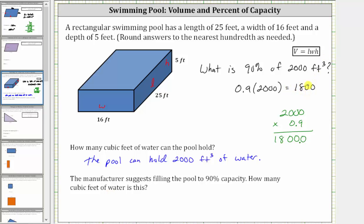Which means 1,800 cubic feet of water is 90% of the pool's capacity.